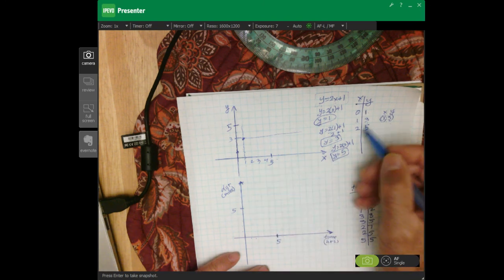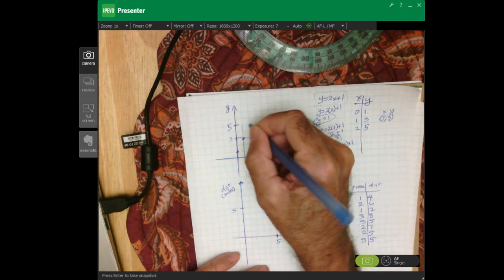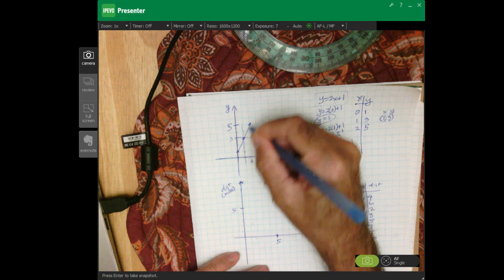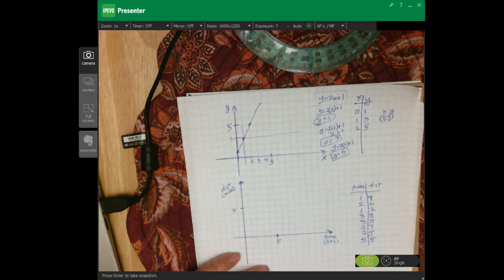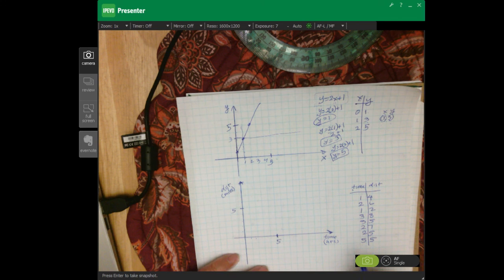So now we plot these points. 1, 3. 2, 5. And then you draw your line. Okay. Now a scatter plot is a little bit different.